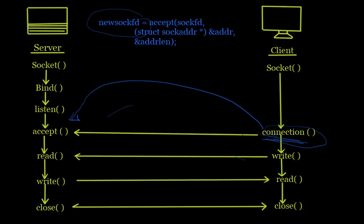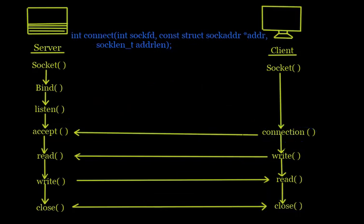Let's look at the connect function. The connect function is pretty similar to the accept function — their arguments are also similar. The only difference is that it does not return a new socket file descriptor like accept does. It returns 0 if the connection is a success, or -1 if it is a failure.